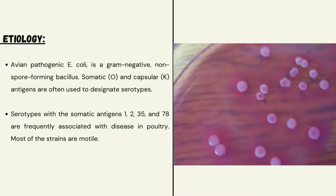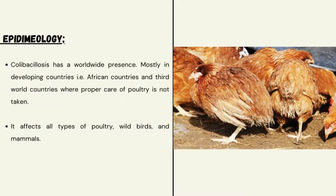Most of the strains are motile. Epidemiology: colibacillosis has a worldwide presence, mostly in developing countries — African countries and third world countries — where proper care of poultry is not taken. It affects all types of poultry, wild birds, and mammals.